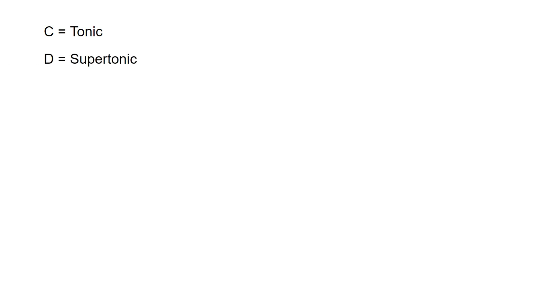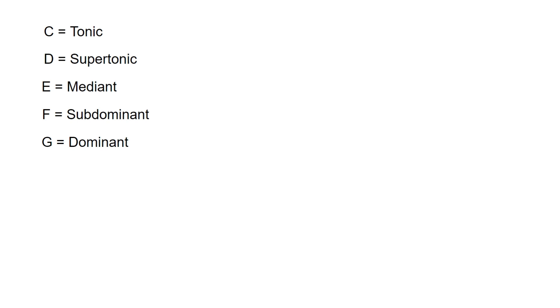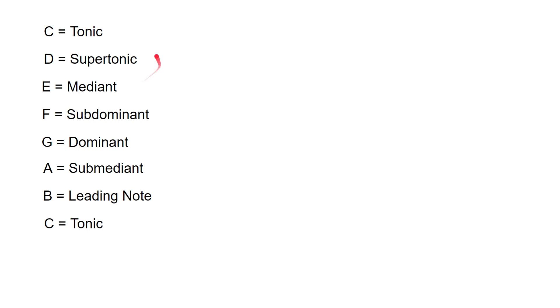C in the key of C is the home note — it's the tonic, the most important note in the scale. D is the supertonic, since 'super' means above, so D is the note above C. E is the mediant, F is the subdominant, G is the dominant, A is the submediant, and B is the leading note, and then we're back to C the tonic. The mediant is midway between the tonic and the dominant, which is why it's called the mediant. The submediant is midway between the tonic at the top and the subdominant, with 'sub' meaning below the dominant. But the most important ones we're looking at today are the tonic and the dominant.